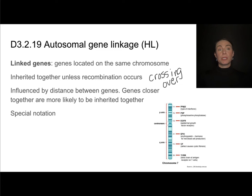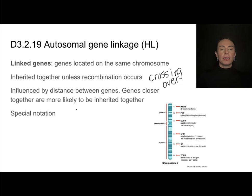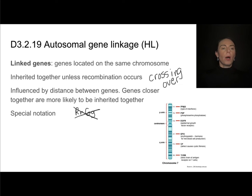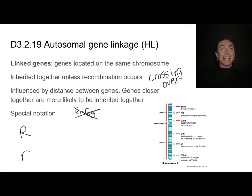We have a special notation for linked genes. If two traits are unlinked, I would write them side by side — that is unlinked notation. We don't write them that way if they are linked. So what does linked notation tell us? This individual got a dominant allele from one parent and a recessive allele from another for each gene. I would write the dominant allele from one parent, the recessive allele from another, and use two lines to separate them.